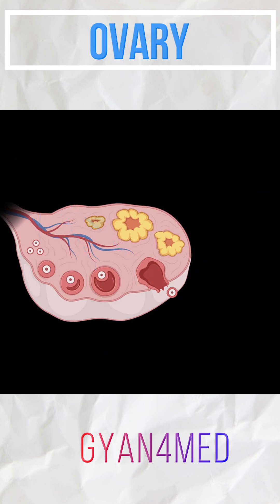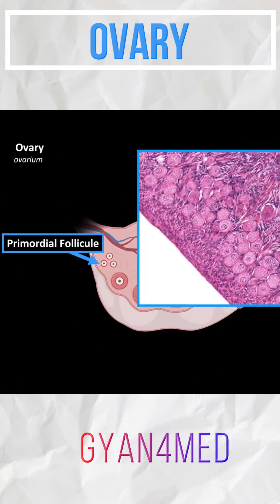A female is born with many small follicles that kind of cluster together in the periphery of the ovary. They are called primordial follicles.